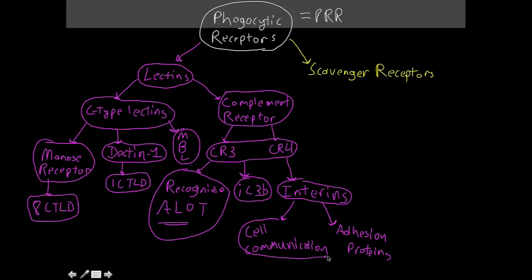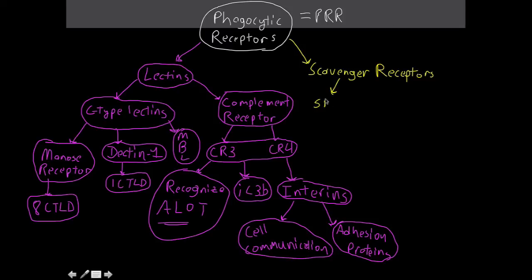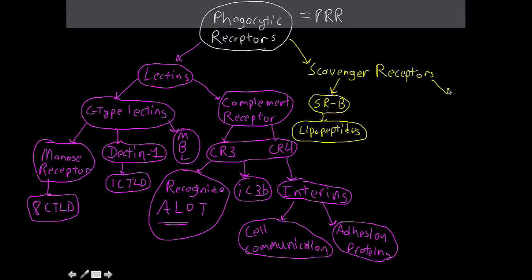Now moving to scavenger receptors on the concept map. Scavenger receptor B binds to lipopeptides. Scavenger receptor A binds to three things.